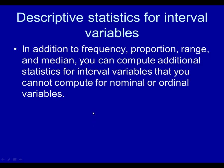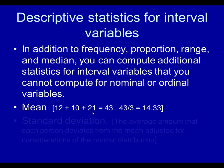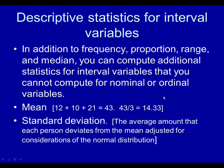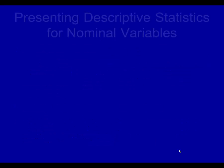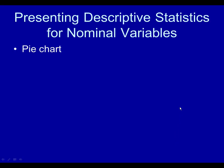Descriptive statistics for interval variables. In addition to those things you can compute for those other variables we have discussed, for interval variables you can also compute the mean and the standard deviation. The mean is the average, which people should be familiar with how that is computed. The standard deviation is the average amount that each person deviates from the mean adjusted for considerations of the normal distribution. There's a formula for that, but it basically tells you something about the variance. How different were people in your sample as compared to how similar they are.